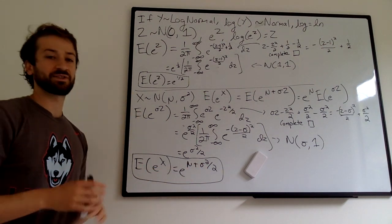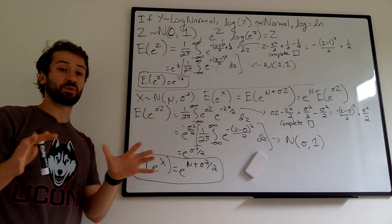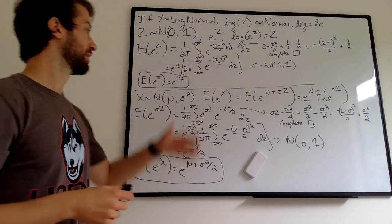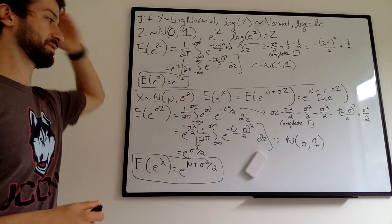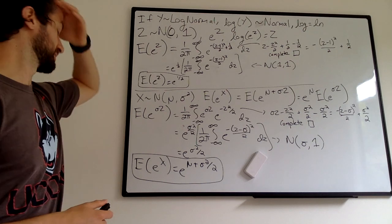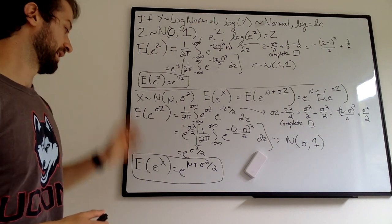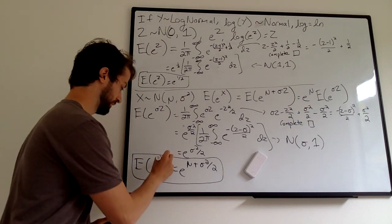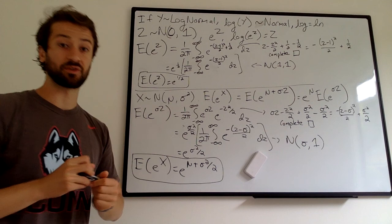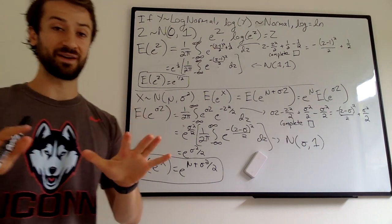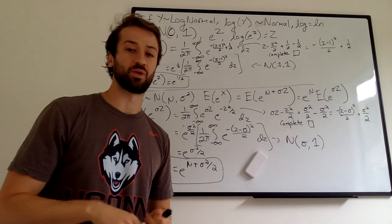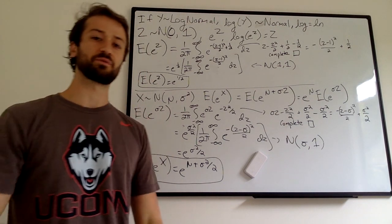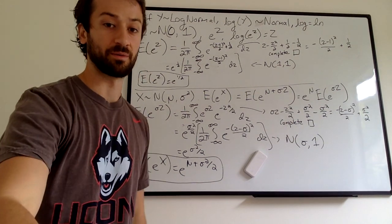So hopefully that makes sense. Log-normal is a little bit tricky — just remember what log-normal means: the log is normal. And once you know the log is normal, we can do all this integration and calculation to get the expectation of a log-normal. In the next video, we're going to talk about getting the variance of a log-normal, just so you get extra familiar with it. Alright, see you then.